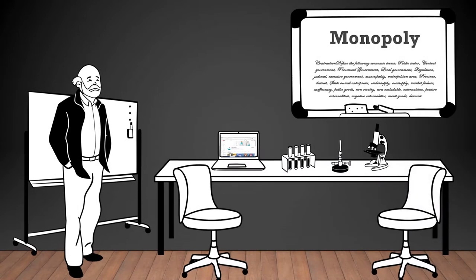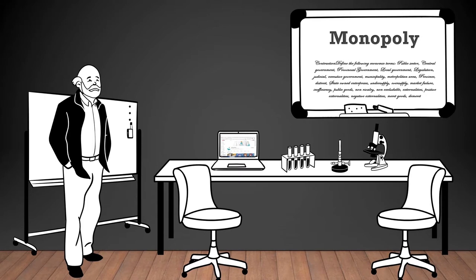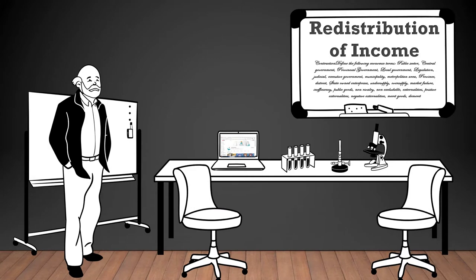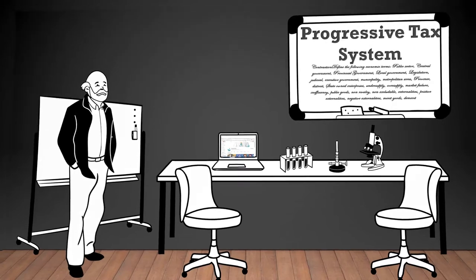Monopoly: a market structure where a single seller or producer controls the entire supply of a good or service, leading to limited competition. Redistribution of income: government policies aimed at altering the distribution of income in society to reduce inequality. Progressive tax system: a tax system where the average tax rate increases as income increases, resulting in higher-income individuals paying a higher percentage of their income in taxes.